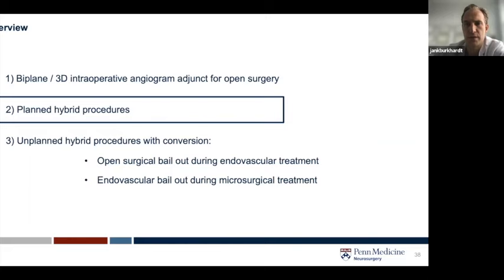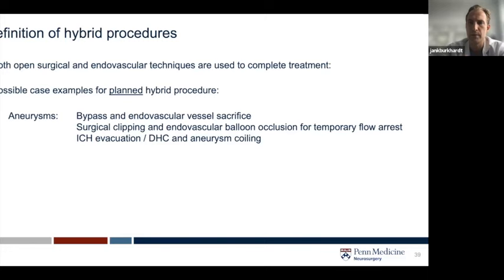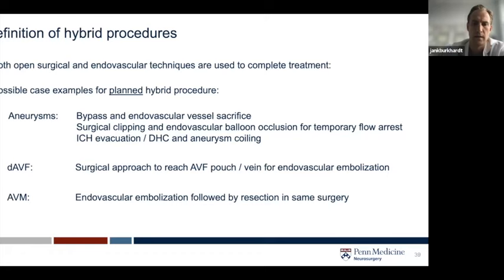Now let me talk about hybrid procedures, starting with planned procedures. A hybrid procedure, for me, is one where you plan from the beginning to use both open microsurgical techniques and endovascular techniques to complete the treatment. There are multiple options for different diseases: for aneurysms, combining clipping with balloon occlusion for temporary clipping, or bypass with vessel sacrifice, or ICH evacuation and coiling. For spinal AV fistulas—mainly treated with transarterial/transvenous embolization or microsurgical clipping, but sometimes combined procedures such as direct pouch access for endovascular treatment. And AVMs as well as other diseases are candidates for hybrid approaches.